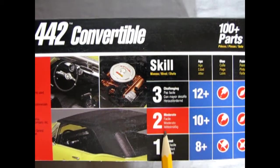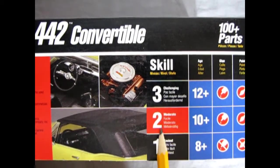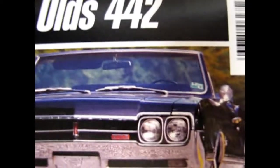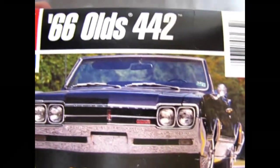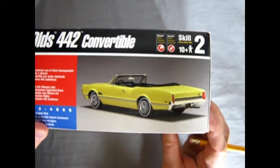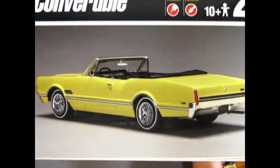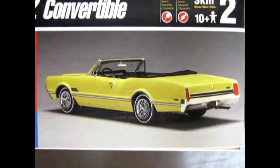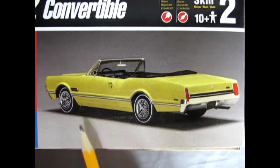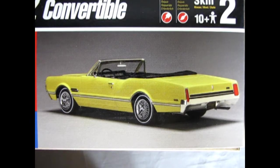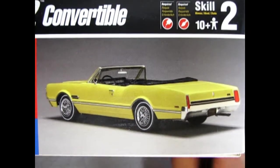This is a kit for skill level 2 for ages 10 and up. Requires glue and paint. There's 100 parts to this kit. The end of the box looks very much the same. And there's that yellow Oldsmobile on the side of the box. It's a very nice looking model kit. As you see it's got the wire wheels and the tail lights and everything. It says build with convertible top up or down. Opening hood with detailed engine and authentic 442 emblems. So again a very nice model kit.